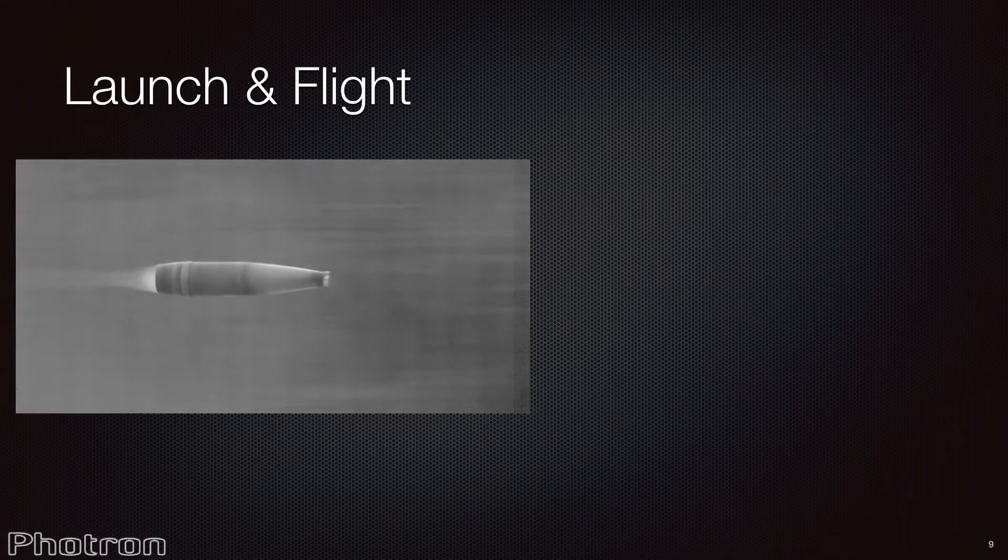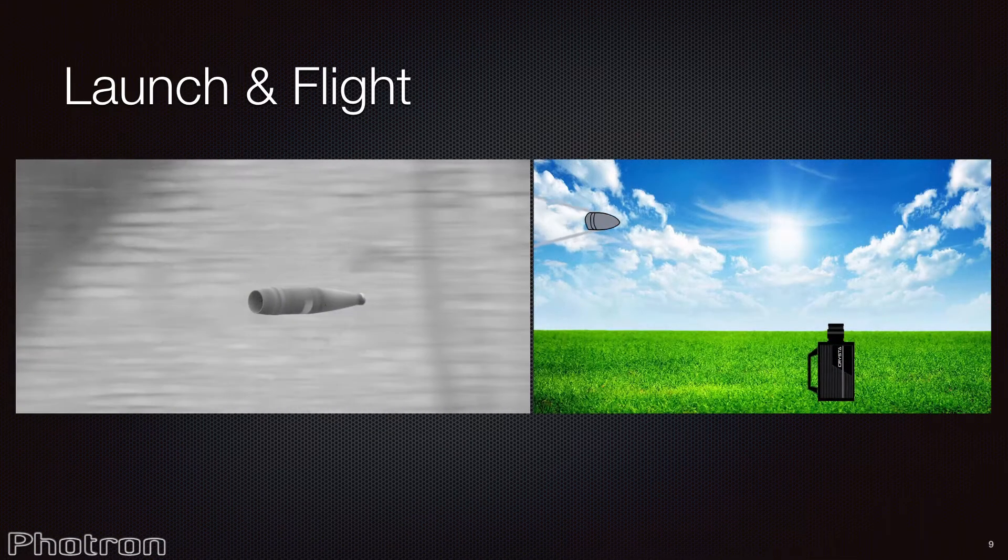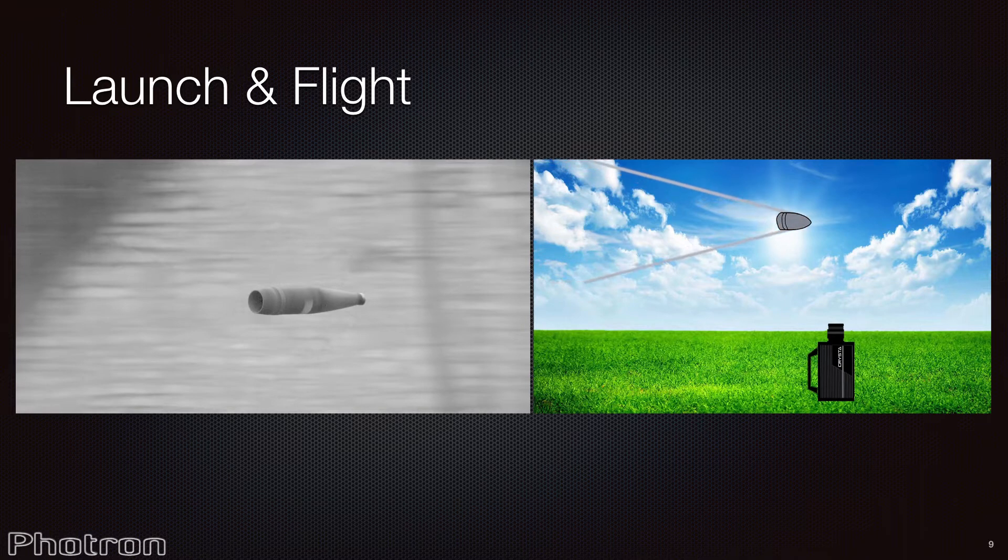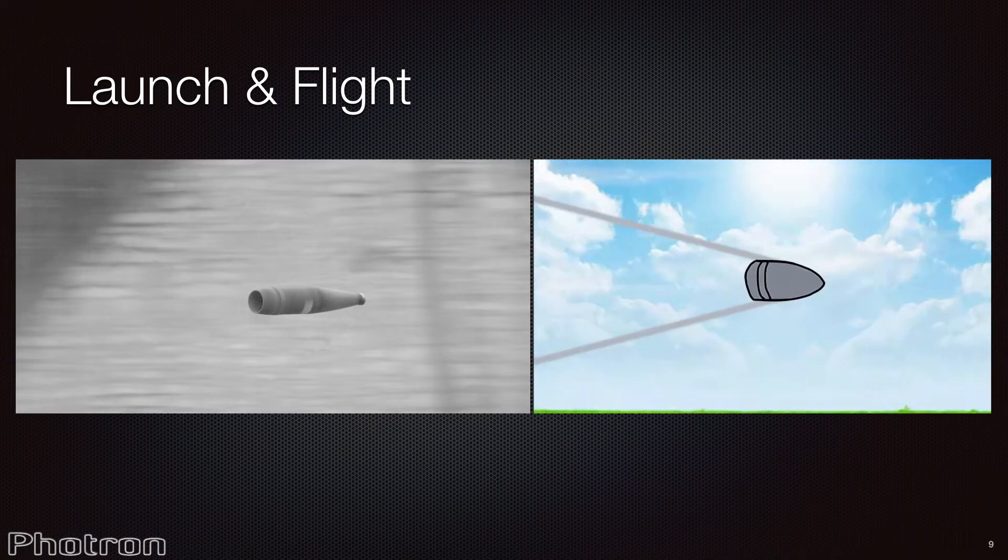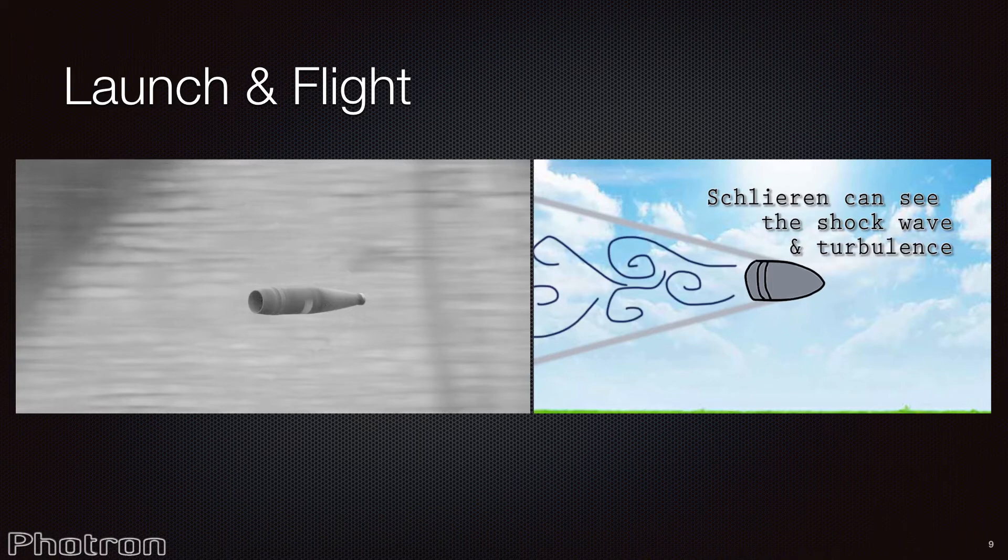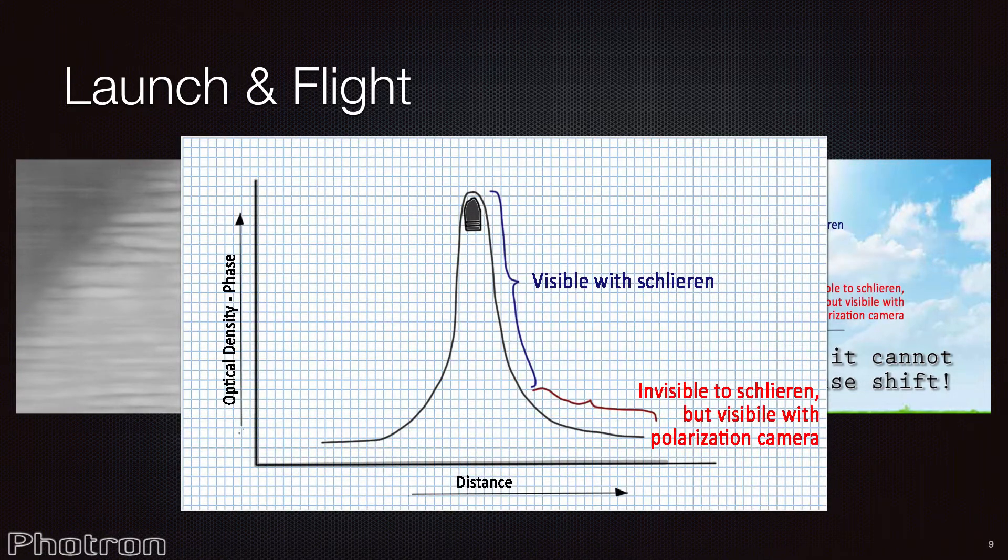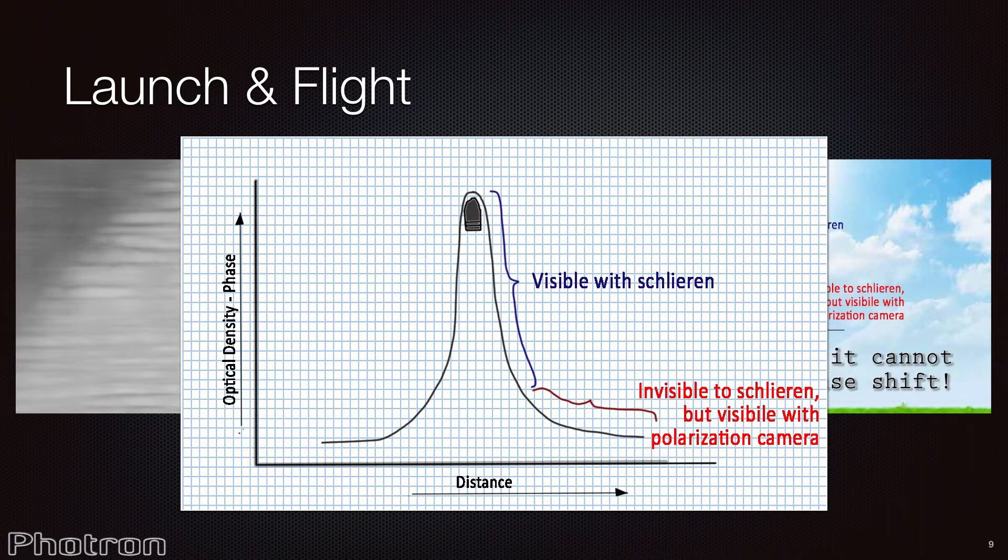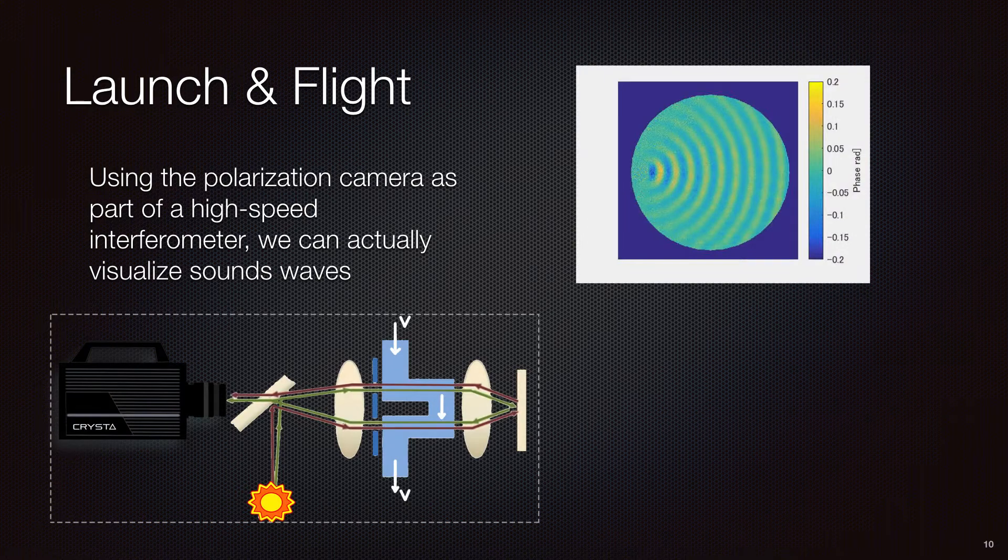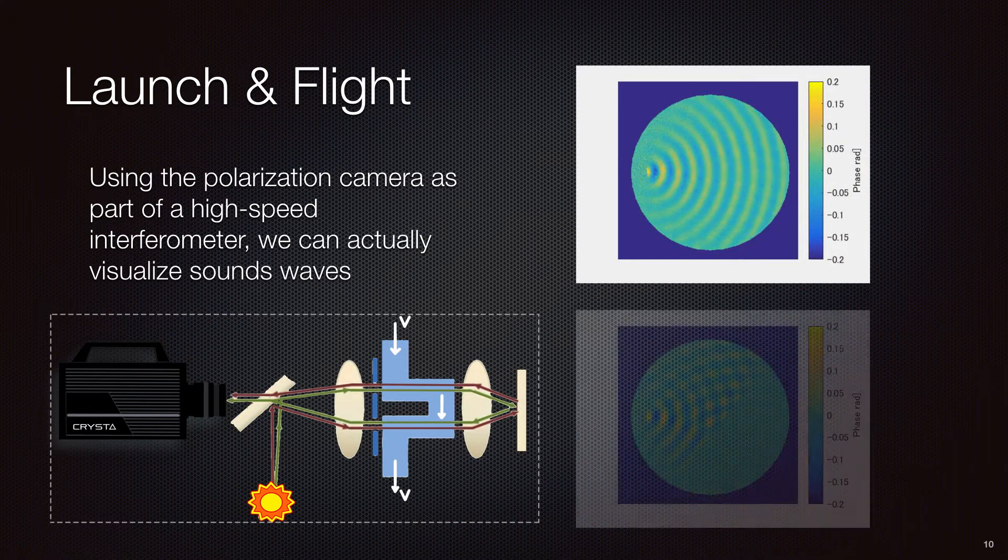In an interferometer, light from a single source is split into two beams that travel different optical paths, then are combined again to show the interference. The resulting interference fringes give information about the difference in the optical path length. Being able to quantify the phase difference is useful because we can see changes of the medium, such as air, gases, water, shock waves, etc.